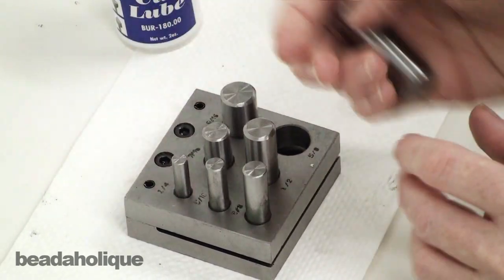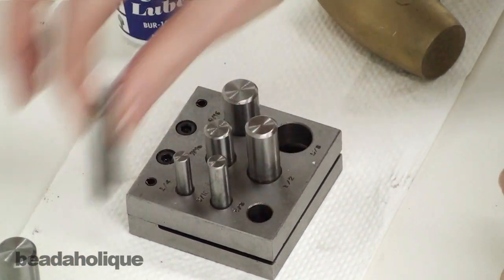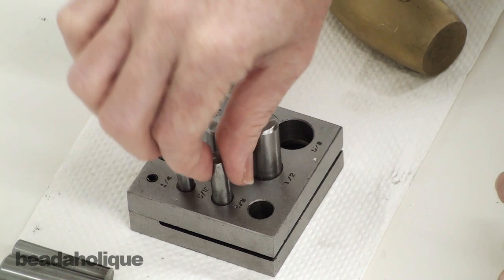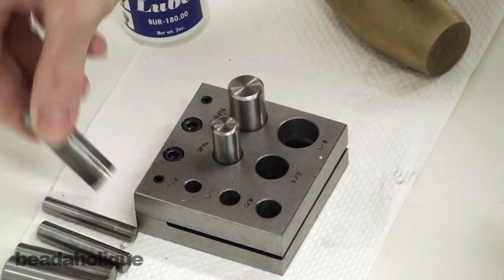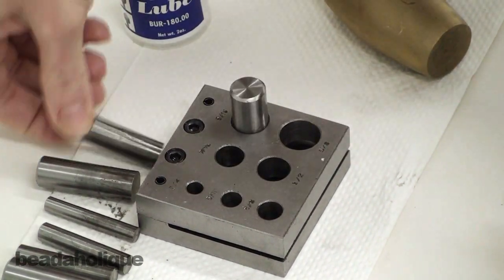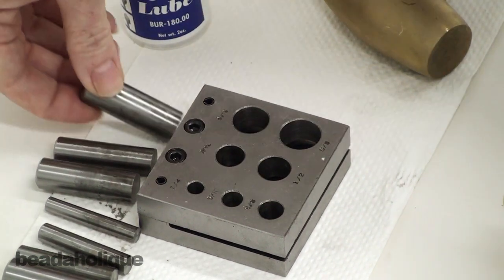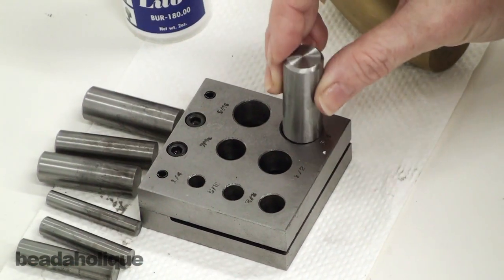So if you're going to cut, what you're going to want to do is remove all the ones that you're not going to be using. Just easily take them out. Now I'm going to go ahead and I'm going to do the five eighths one.